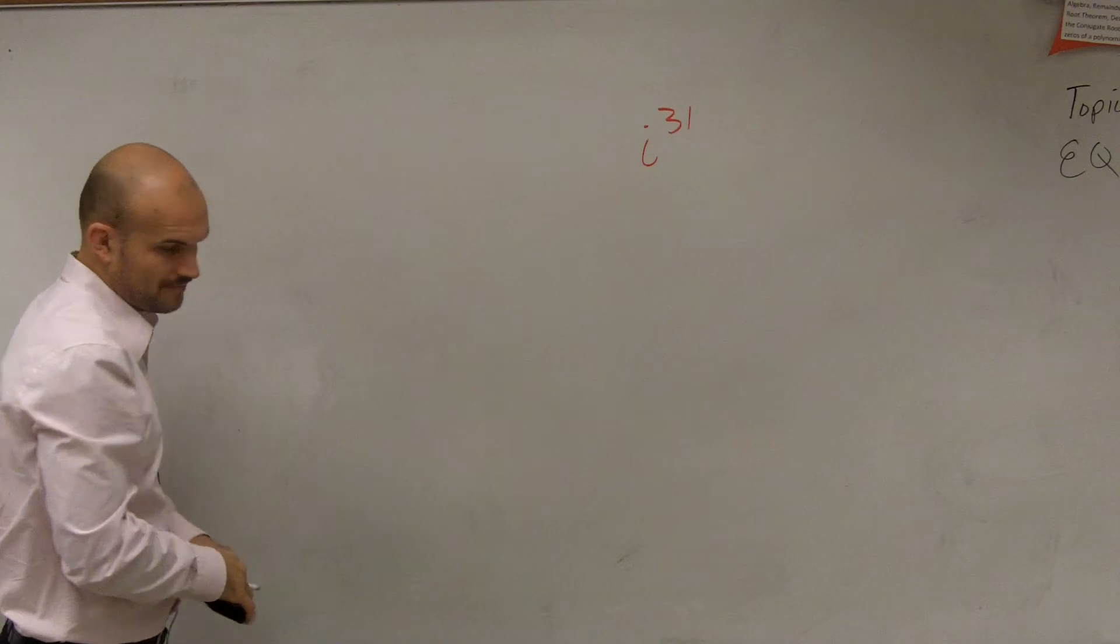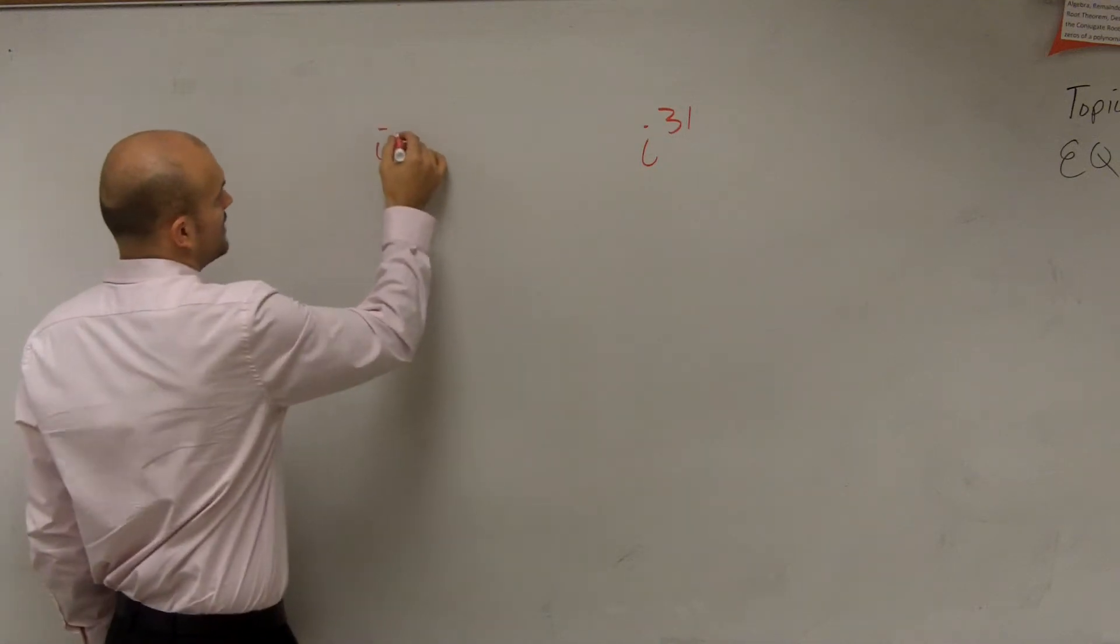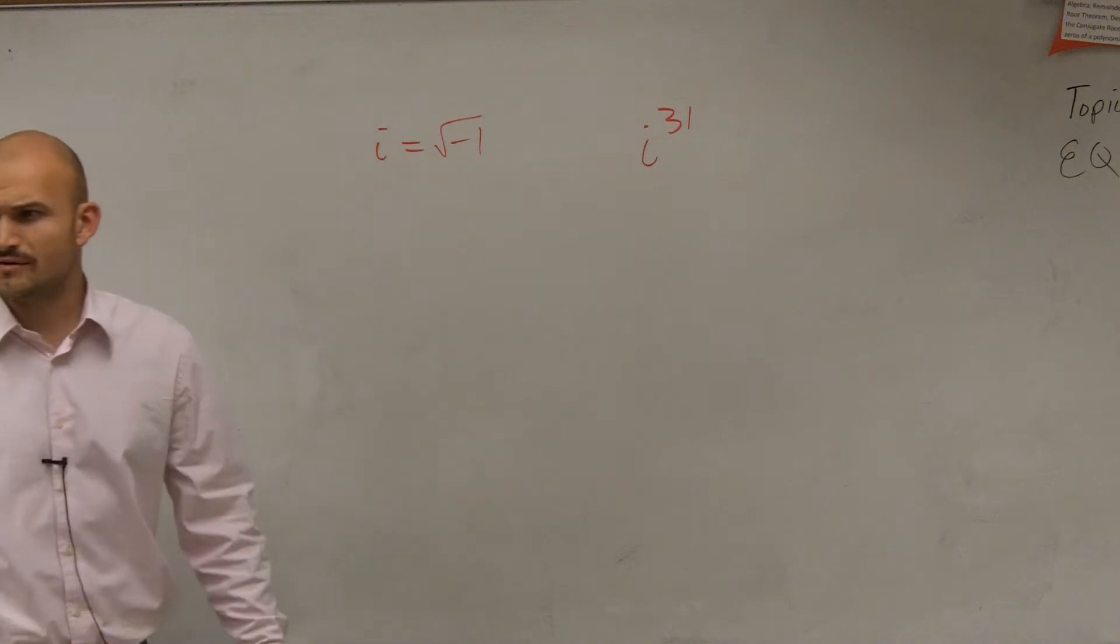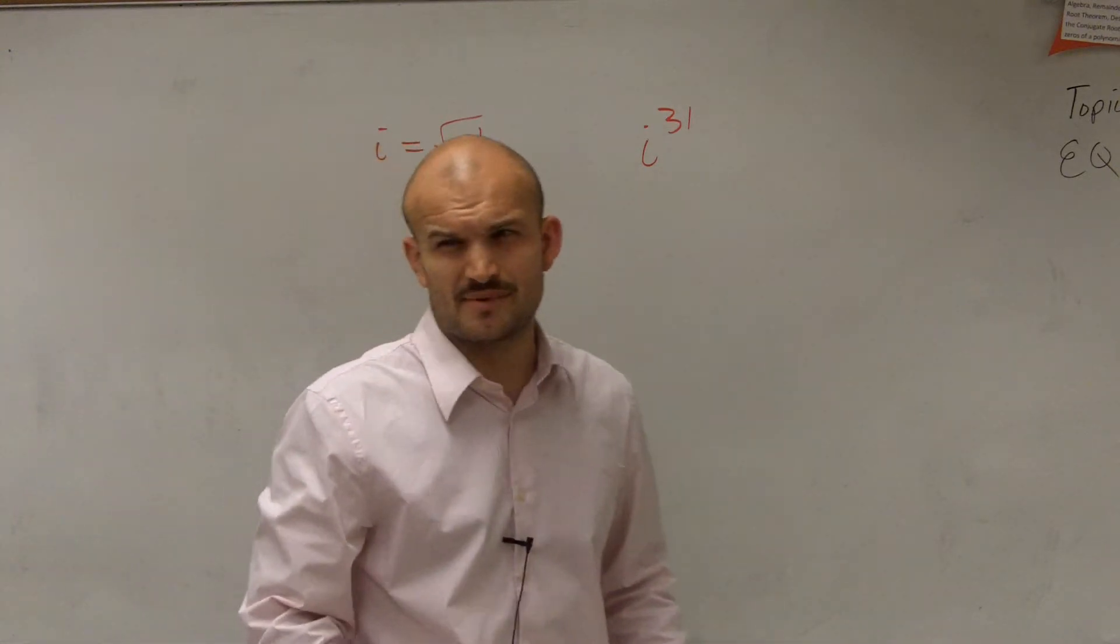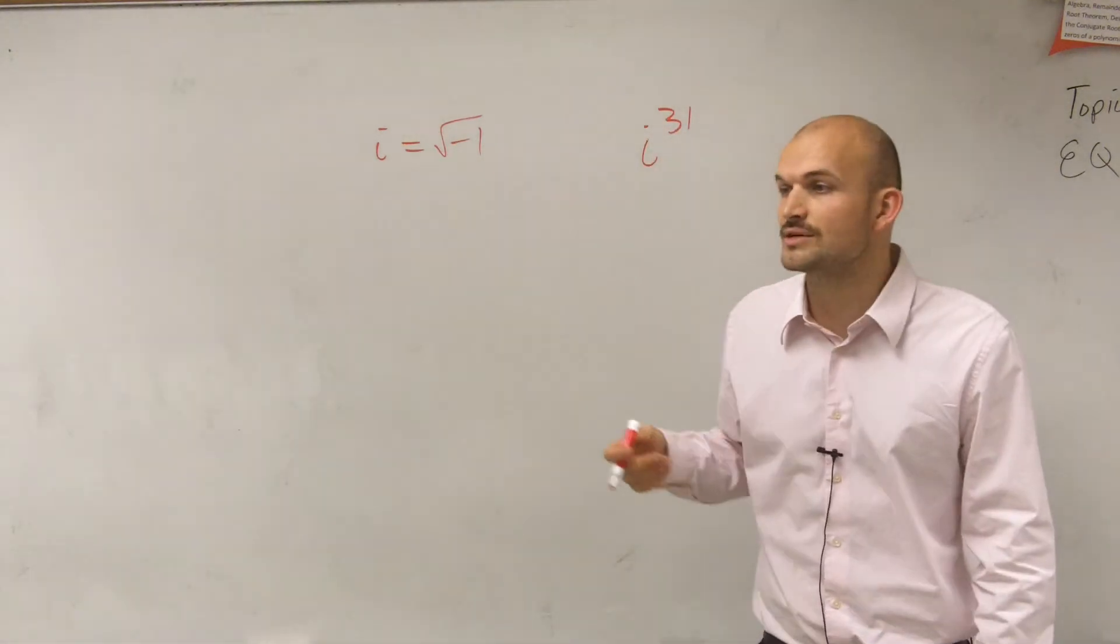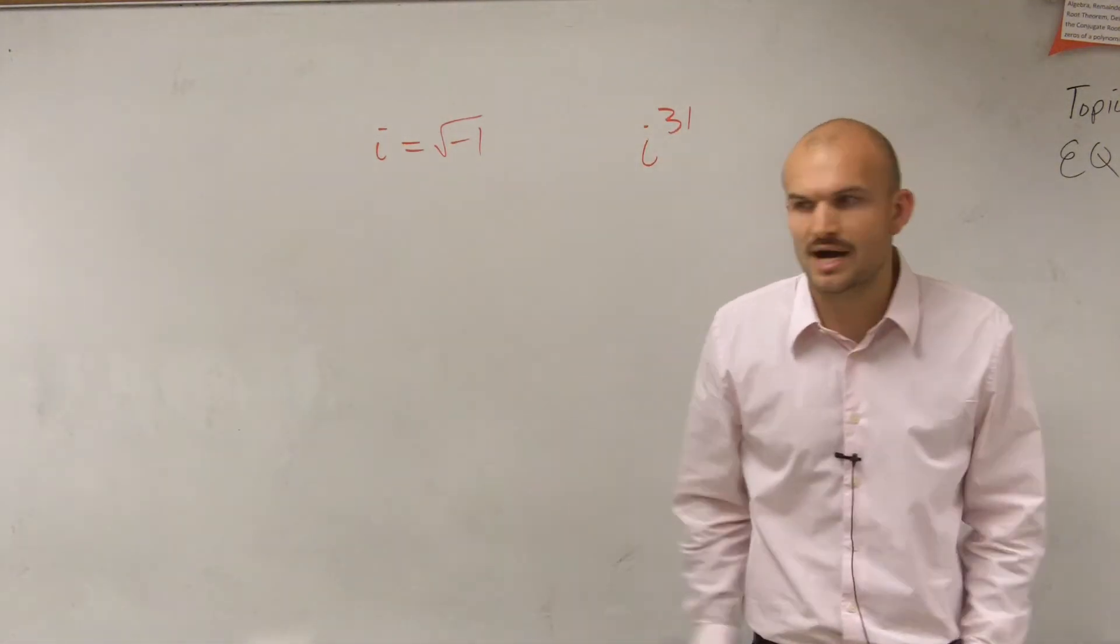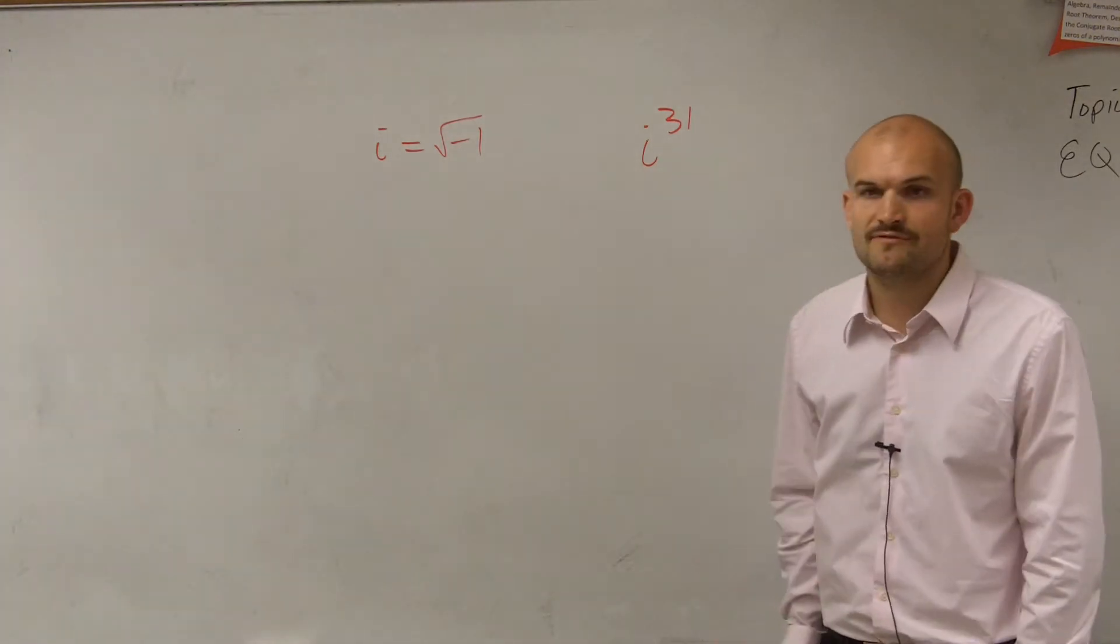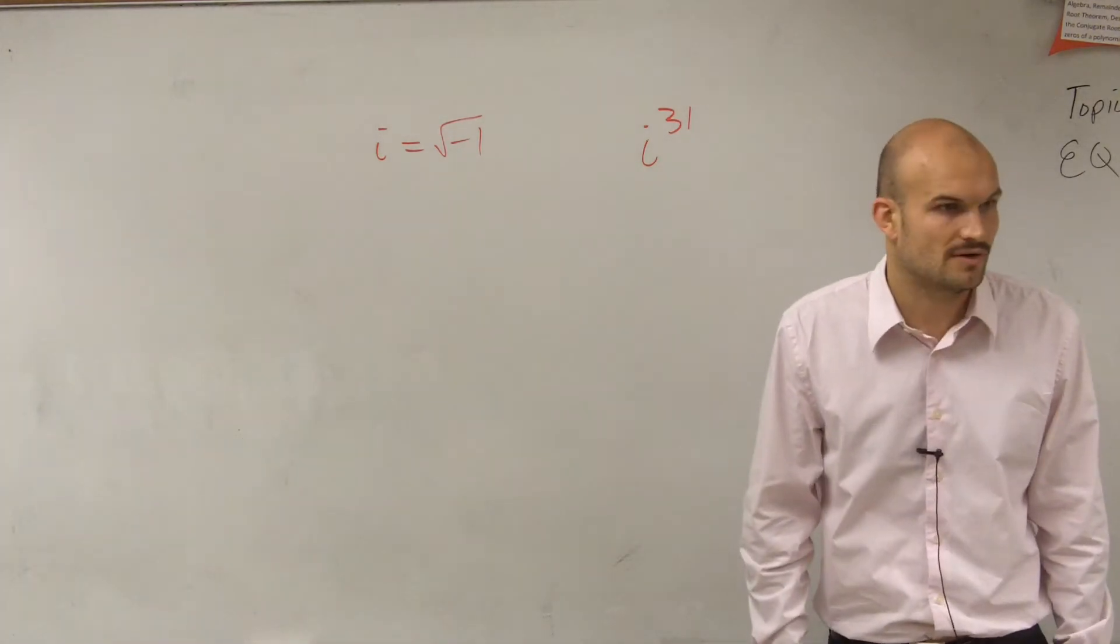Now, if you guys remember, we talked about i representing the square root of negative 1. Now, some of you, when I said what's i squared, some of you looked at me like I have no idea what i squared is. And some of you automatically remembered, oh, i squared is equal to negative 1. Well, how do we know i squared is equal to negative 1? And how are we ever going to figure out what i to the 31st power is?